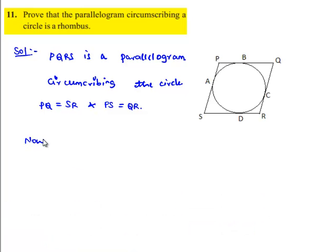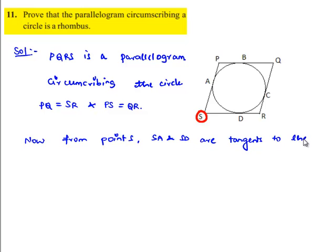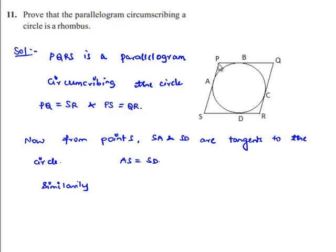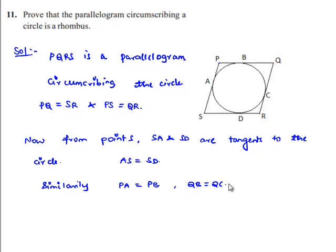From point S, SA and SD are tangents to the circle. Since lengths of tangents from an external point to a circle are equal, AS equals SD. Similarly, from point P: PA equals PB; from point Q: QB equals QC; from point R: RC equals RD.